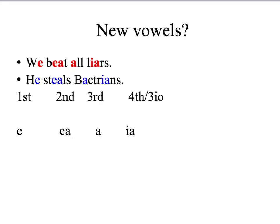The new vowels — we beat all liars — first conjugation: E; second conjugation: EA; third conjugation: A; fourth conjugation and three IO: IA. You can make up your own mnemonic sentence to help you remember the order of these vowels. One student made up 'He steals Bactrians' earlier this year.